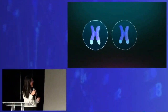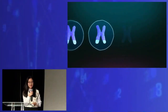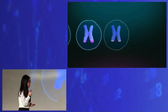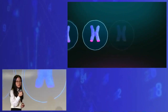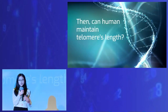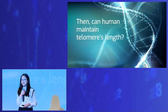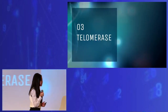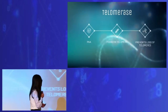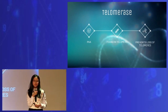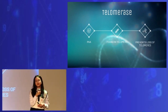Each replication, the stem cell loses a bit of telomeres at the end. And when this happens, you know that you've aged. So how can humans maintain the length of our telomeres? This is where our hero telomerase comes in.